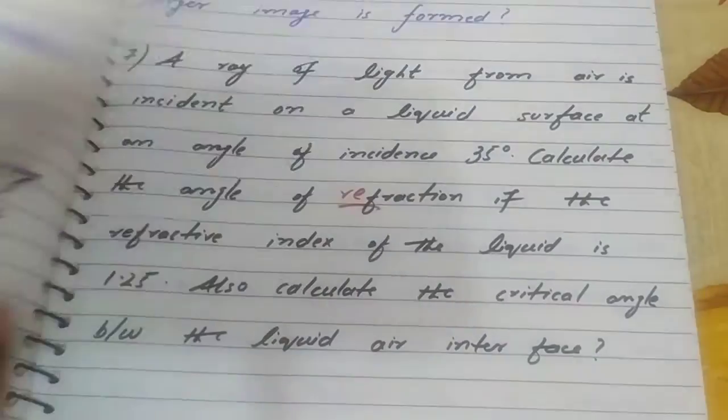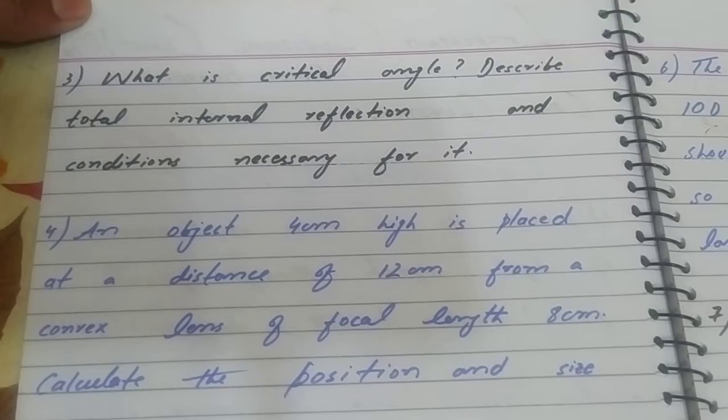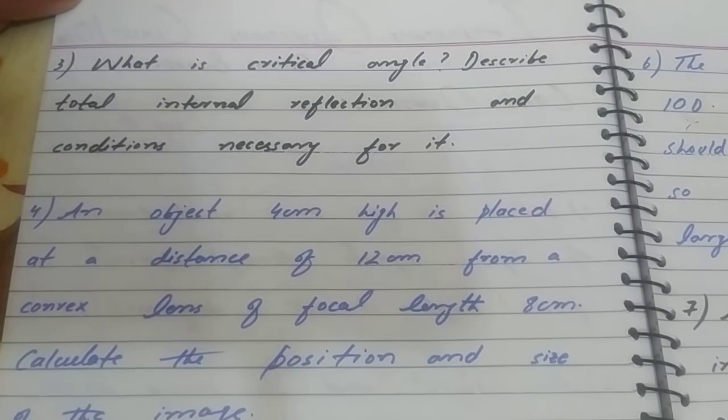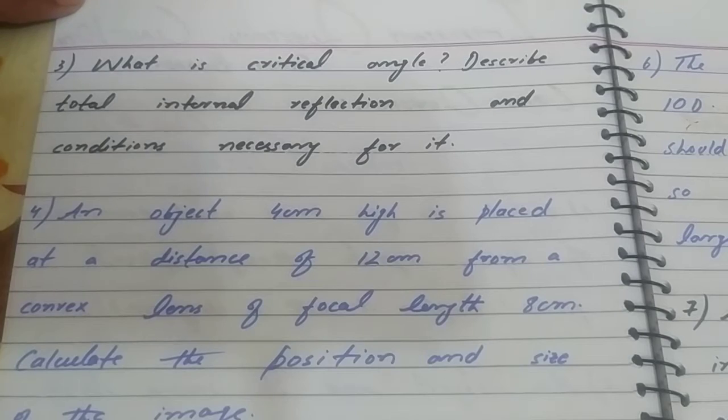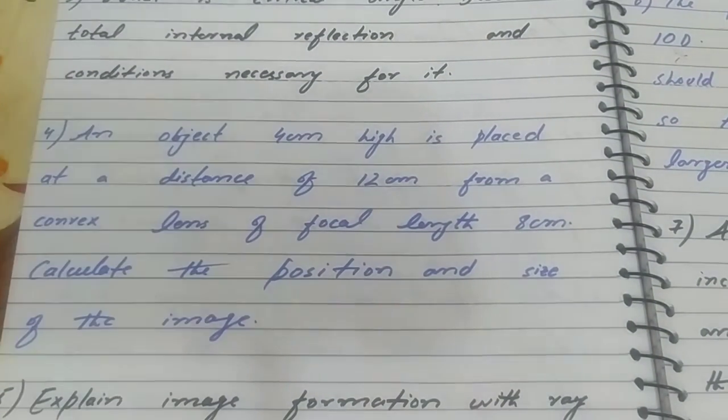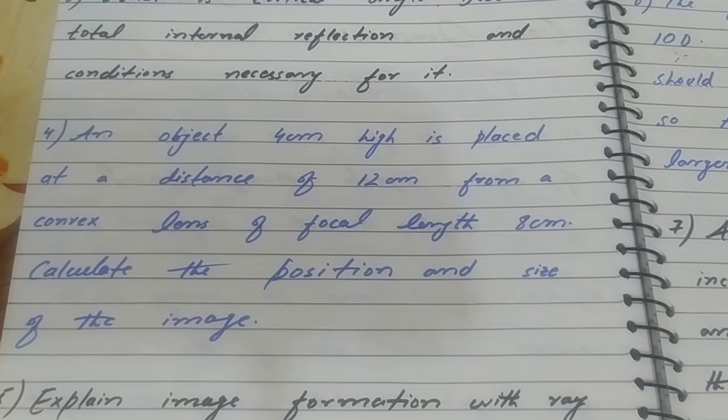Question three: What is critical angle? Describe total internal reflection and conditions necessary for it. Question four: An object four centimeters high is placed at a distance of 12 centimeters from a convex lens.